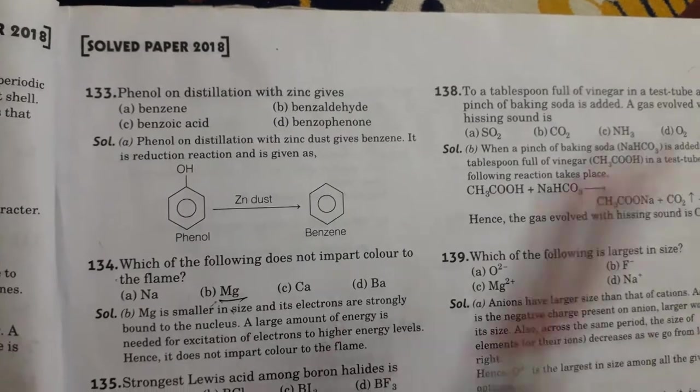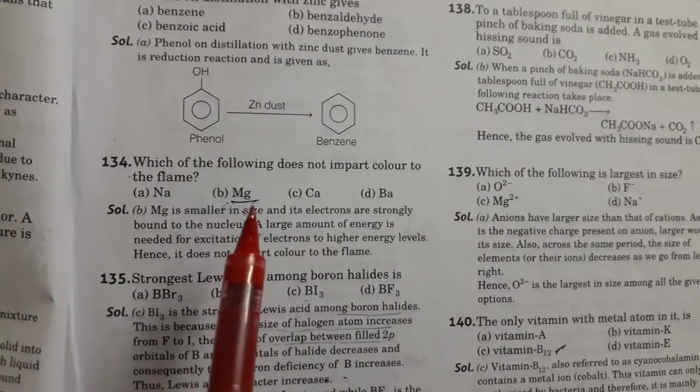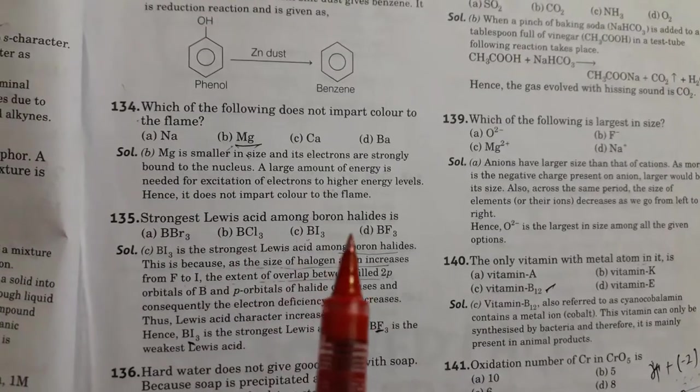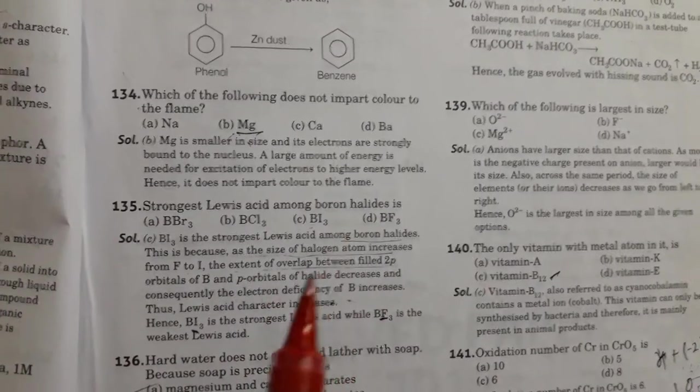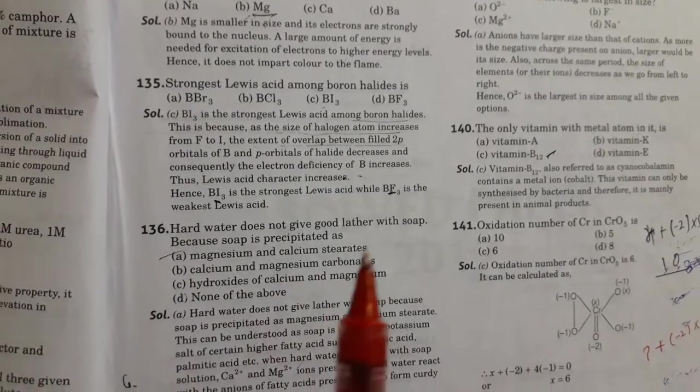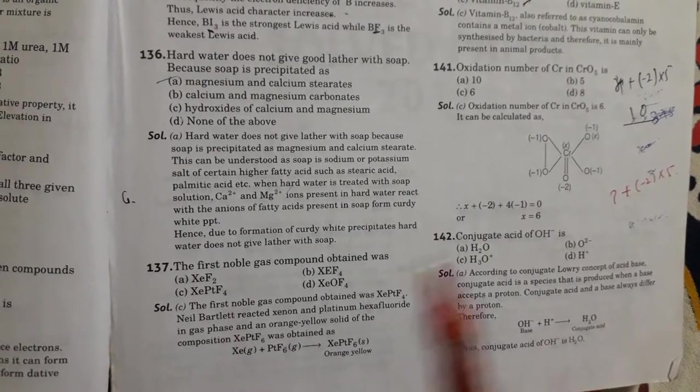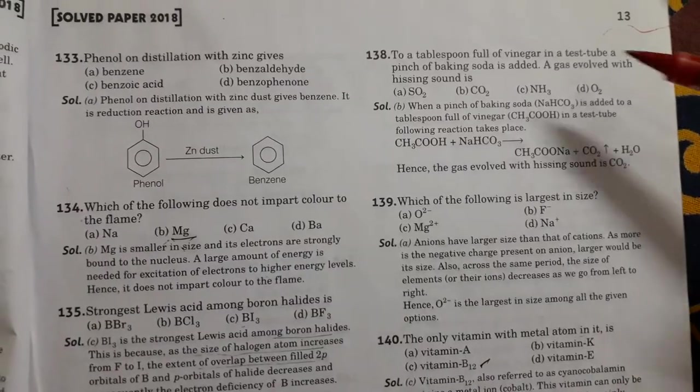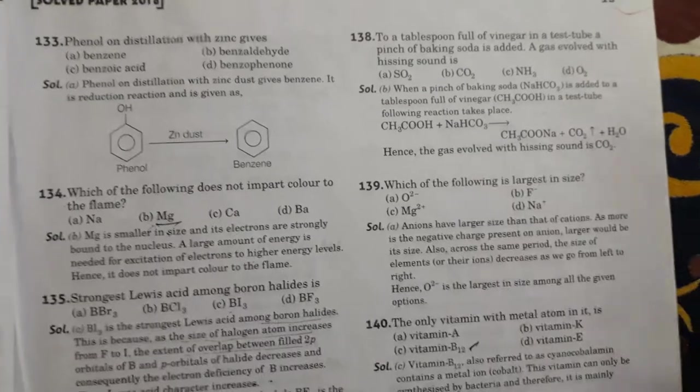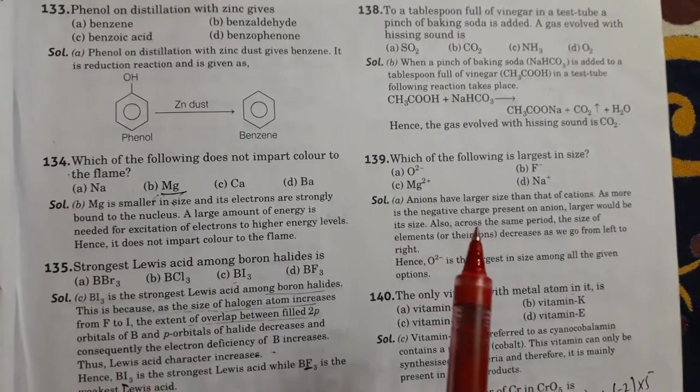Next is phenol on distillation with zinc gives benzene. Next is which of the following does not impart color to the flame. So magnesium does not color to the flame. The next is strongest Lewis acid among boron halides is BI3. Next is hard water does not give good lather with soap because soap is precipitated as magnesium and calcium stearates. Option A is right. Next is the first noble gas compound obtained was XePtF6, option C. Next is to a tablespoon full of vinegar in a test tube a pinch of baking soda is added. A gas evolved with hissing sound is carbon dioxide gas. Then which of the following is largest in size. So this is O2 negative, largest in size.